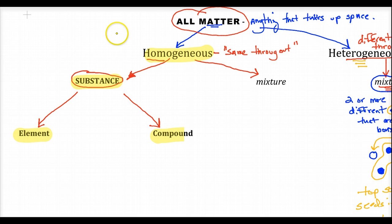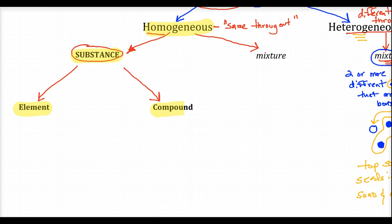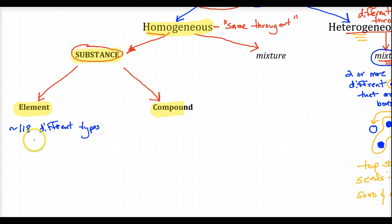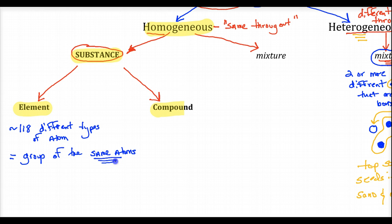What is an element? From the periodic table, we have about 118 different chemical symbols — 118 different types, or groups of atoms. An element is essentially a group of the same atoms. We know they're the same atoms because we give them the same chemical symbol.